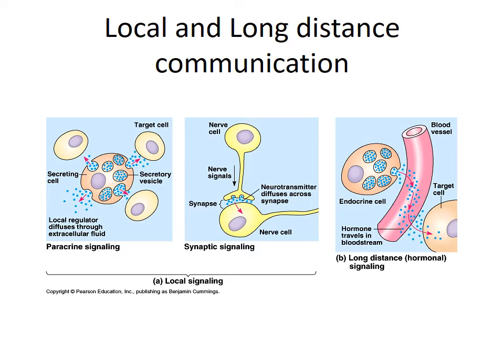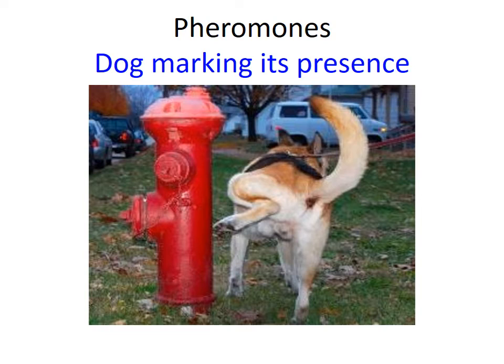Other ways that signals can be transmitted over very long distances — even miles — are things like pheromones. These are chemicals secreted by animals and released into the air. Your dog marking its territory on a fire hydrant is a form of long-distance signaling. Dogs will come up, smell that fire hydrant, and realize another animal was there. Insects use pheromones quite a bit, and people who produce food have utilized these pheromones to create little pheromone traps that the insects fly into, preventing them from destroying food crops.